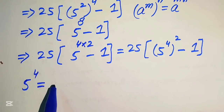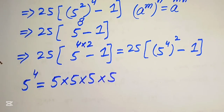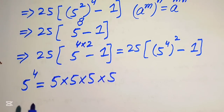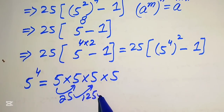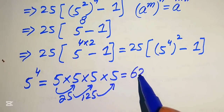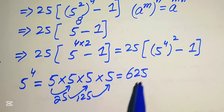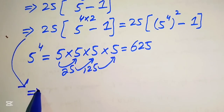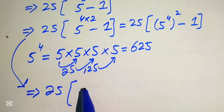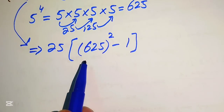5 to the power of 4 means we multiply 5 by itself 4 times. Since a calculator is not allowed, we do this in our mind: 5 times 5 is 25, 25 times 5 is 125, 125 times 5 equals 625. So we replace 5 to the power of 4 with 625. Our expression becomes 25 into 625 squared minus 1.